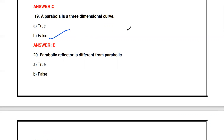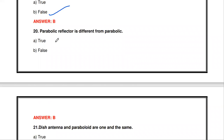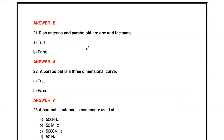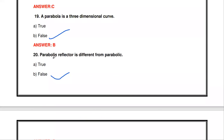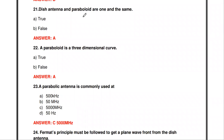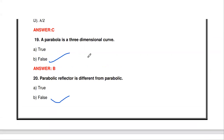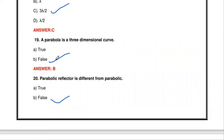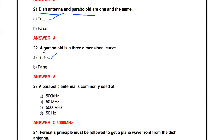The next question: a parabola is a three-dimensional curve - true or false? It is false. A parabola is not a three-dimensional curve. The parabolic reflector is different from a parabola - true or false? It is false. A parabola and a parabolic reflector are not the same; the dish antenna and the paraboloid are the same.